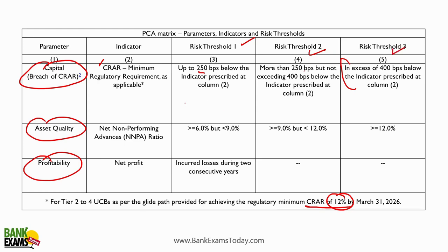For asset quality, the indicator is the net non-performing advances ratio - net NPA ratio. If it is between 6% to 9%, it would be under Risk Threshold 1. If it is between 9% to 12%, it would be under Risk Threshold 2. If it is more than 12%, it would be under Risk Threshold 3.